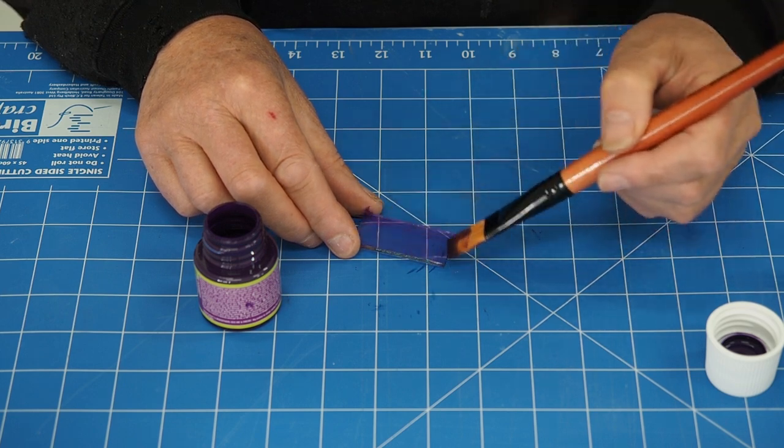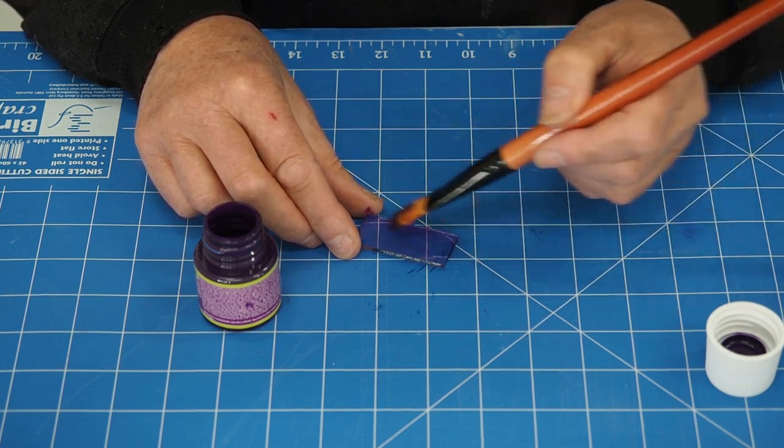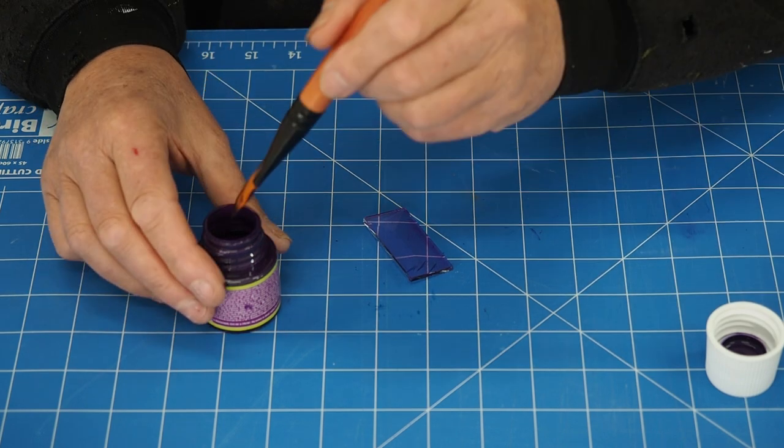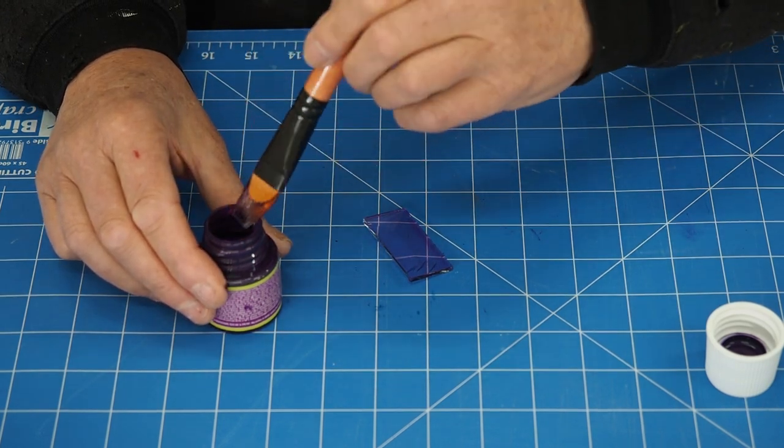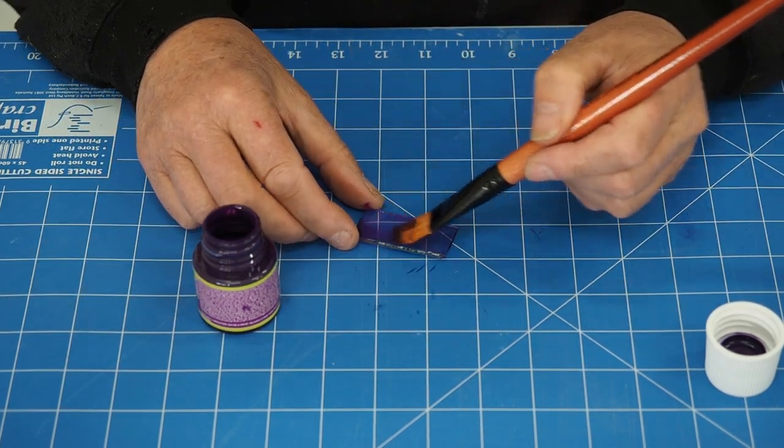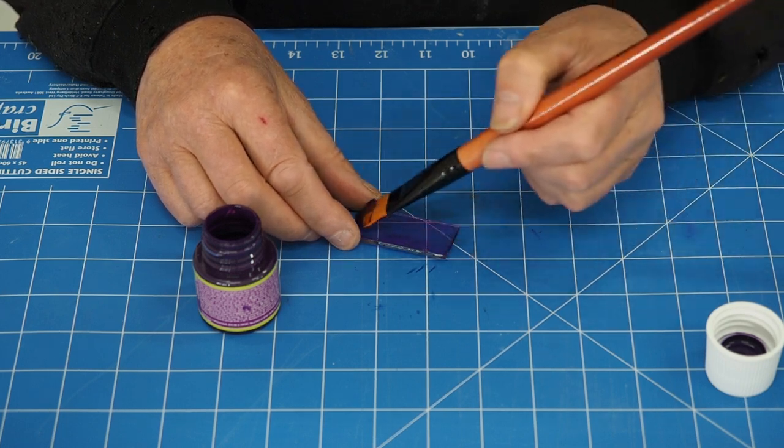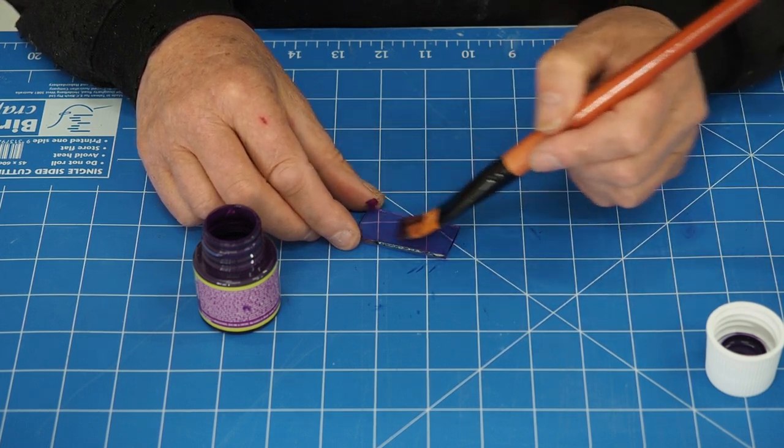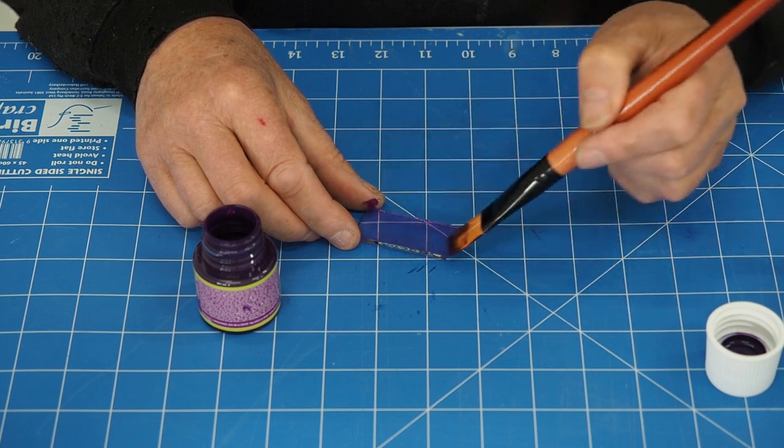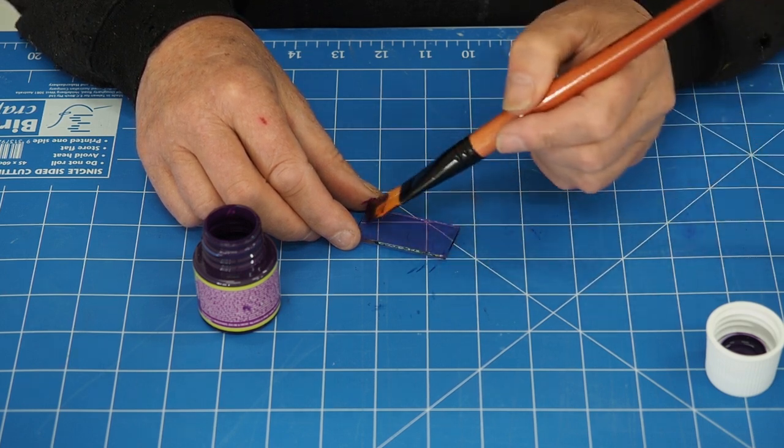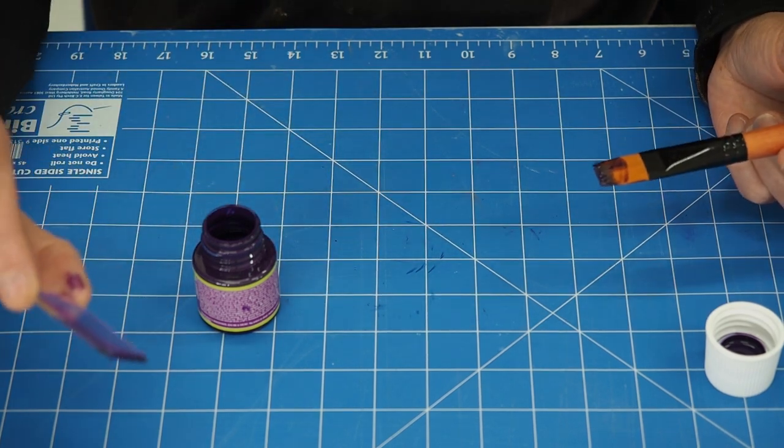So what we don't want is air bubbles and we're really trying to avoid getting brush strokes in it. And I have a feeling that's going to be quite difficult trying to avoid the brush strokes. But look, this is not going to be a work of art anyway. I'm just going to put another little bit on that. And then I'm going to leave these and then put another coat on them in about 30 minutes time. But I'll do that off camera because it's just going to be the same as this.